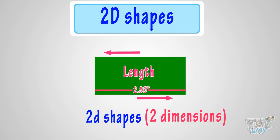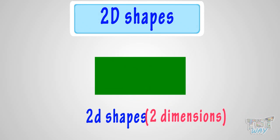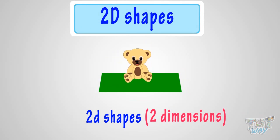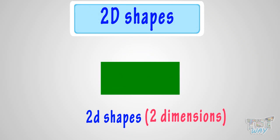So, what have we learned? We have learned that 2D shapes are those shapes where we cannot put anything in them. And they have only 2 dimensions — length and breadth.